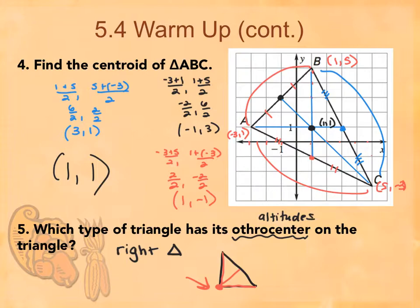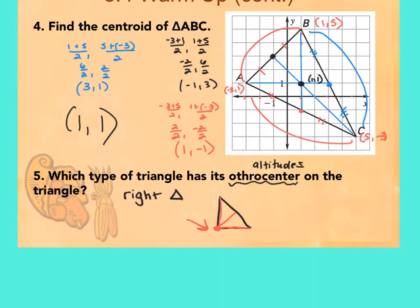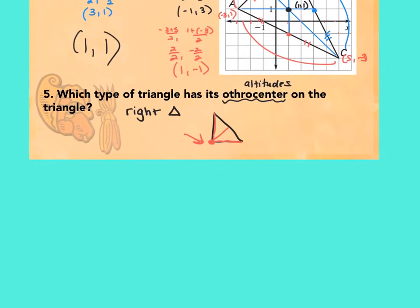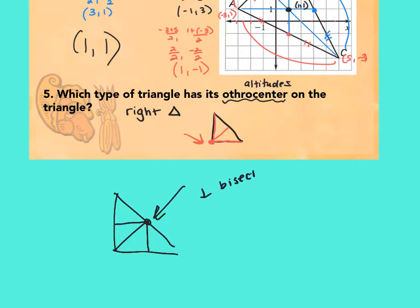Whereas the perpendicular bisectors are where? On the hypotenuse. So if it was perpendicular bisectors, it's the midpoint of the hypotenuse. It would be there because it would be here, here, and here. What's that called? That is your circumcenter.